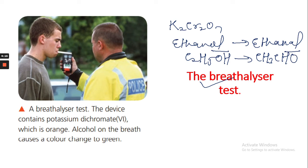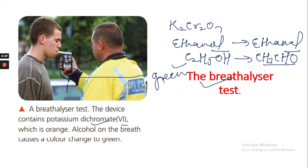This device uses potassium dichromate, which is orange in color. If a person has consumed alcohol, the alcohol oxidizes in the presence of potassium dichromate, and this orange color is converted into green. This color change proves that the driver has been drinking. This is how you can tell whether the driver has drunk or not.